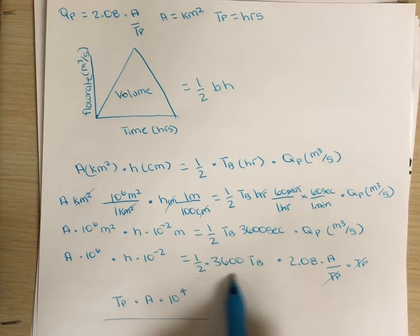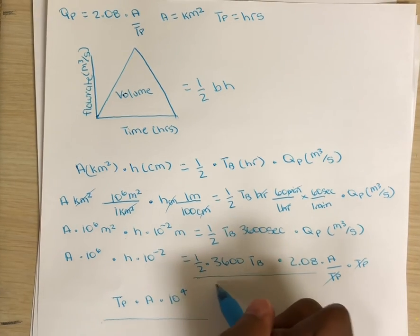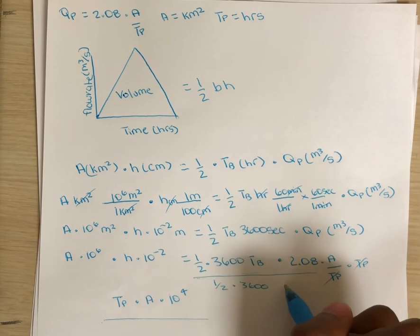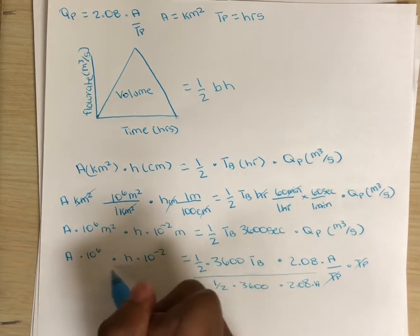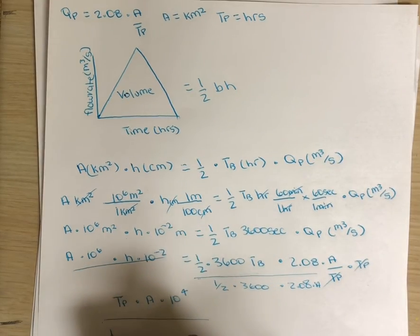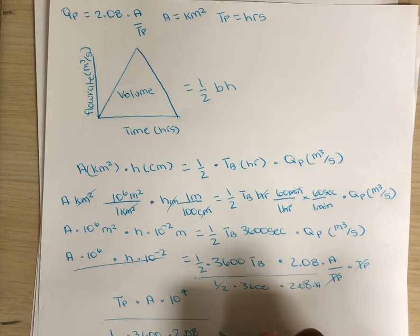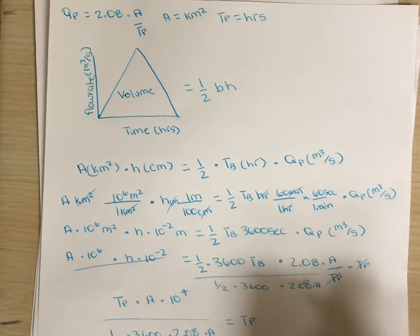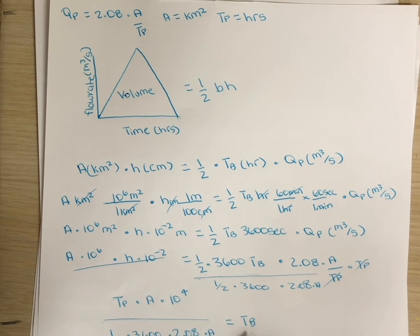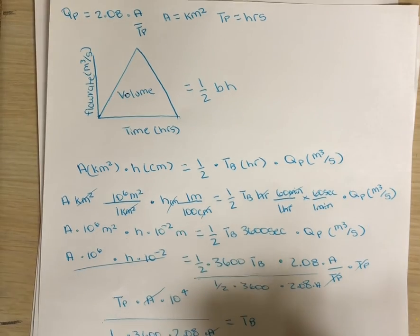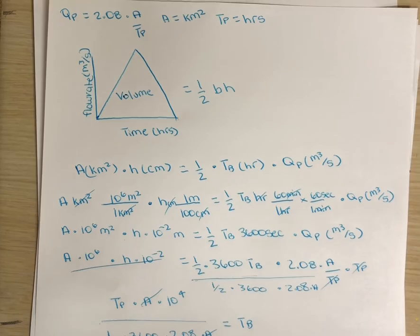Now dividing everything except tb on both sides, we get that tb, which is the time duration of the base, is equal to tp times A times 10 to the fourth over one-half times 3,600 times 2.08 times A. The areas cancel, leaving us with just this. Now let's use our calculator.